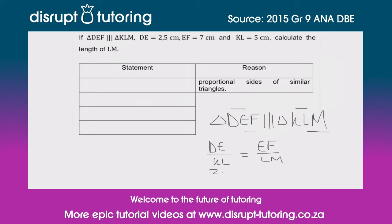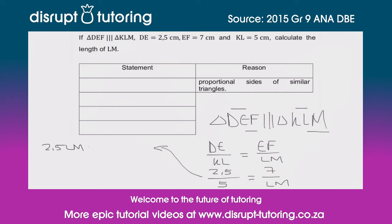Now we can plug in all the values: DE is 2.5, KL is 5, EF is 7, and LM is what we're searching for. We multiply the numerator and denominator across the equal sign. On the left we get 2.5 × LM, and on the right 7 × 5 = 35. Dividing both sides by 2.5, the 2.5s cancel out and we get 35 ÷ 2.5 = 14.